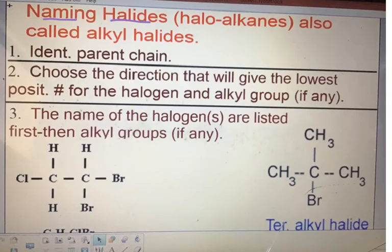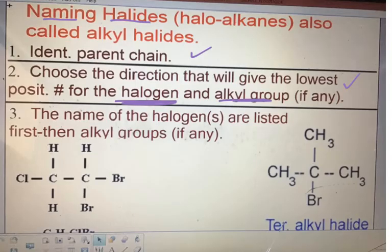So here are the rules. You're going to identify the parent chain as usual. We're going to choose the lowest numbers in terms of the halogen — coming from either direction to give us the lowest numbers for the halogen and the lowest number for the alkyl group. Remember, if we choose a direction, we stay with that direction; we don't mix and match. At the end in terms of naming, we will put the halogen part first, the guy from group 17, and any alkyl groups will come afterwards, then the parent. So let's do some examples.